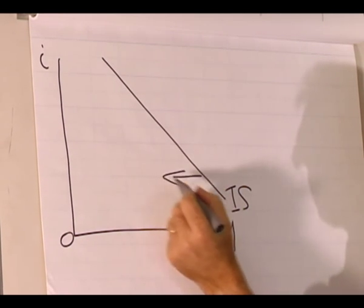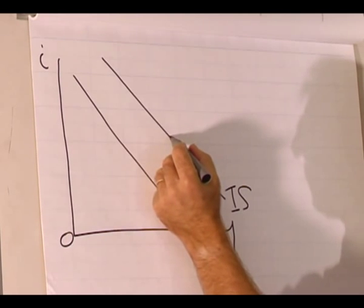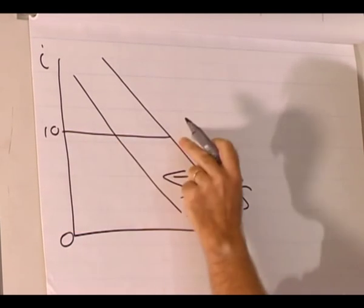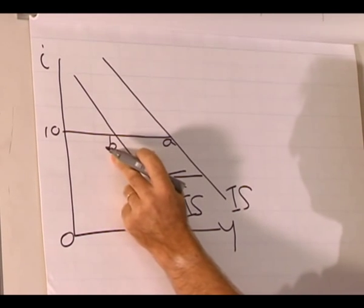The demand for goods and services decreases, therefore the IS curve shifts to the left. At a given interest rate, say 10%, we move from this equilibrium point to this equilibrium point.